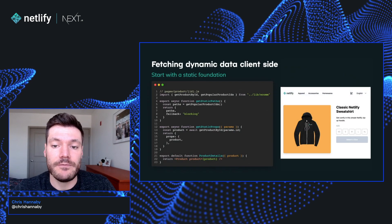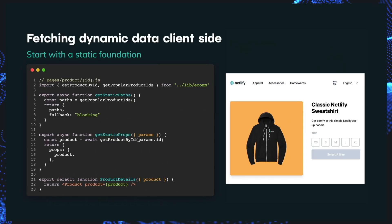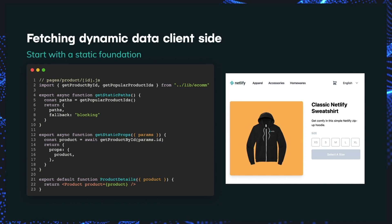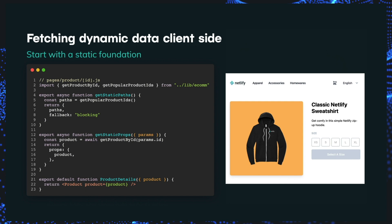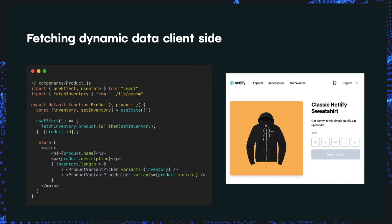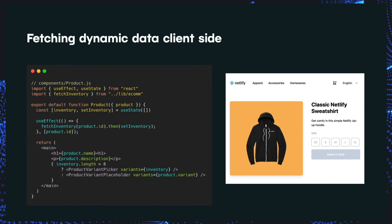Let's look at how we can fetch data client-side in Next.js. We start with this foundational approach of building as much of the page statically as we can, and we should try to use getStaticProps to generate sensible placeholders for any dynamic data. This really helps reduce layout shift that could otherwise be a problem when we're using client-side fetching. Then to actually fetch data client-side, we can wrap any requests in a useEffect hook.